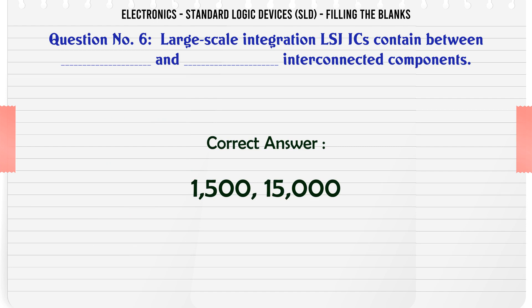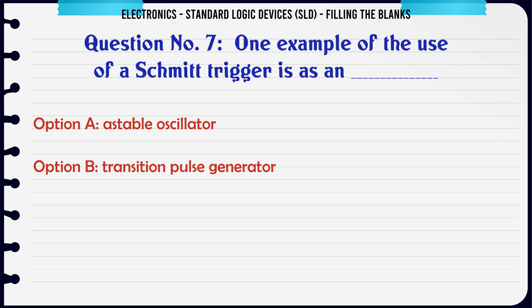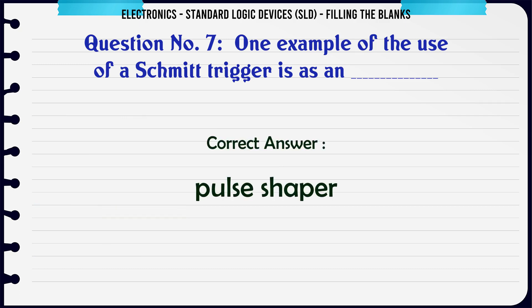One example of the use of a Schmitt trigger is as a: A stable oscillator, B transition pulse generator, C pulse shaper, D buffer. The correct answer is pulse shaper.